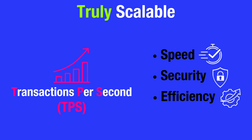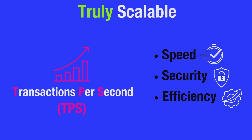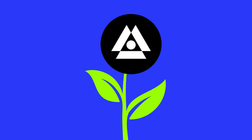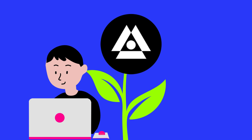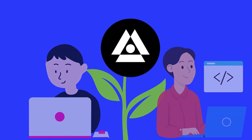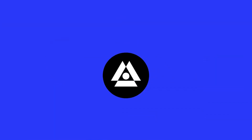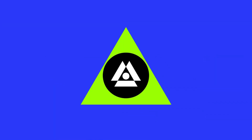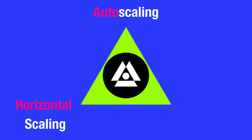Scalability is crucial for a network's adoption because it ensures that the network remains functional and efficient as it grows, providing a seamless experience for both users and developers. Shardium employs three different types of scaling techniques: auto-scaling, horizontal scaling, and linear scaling.